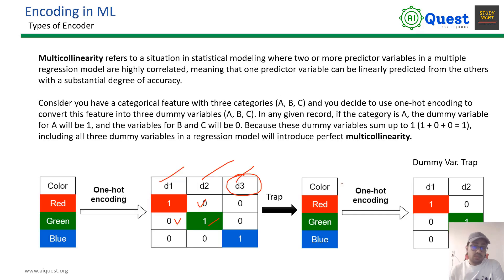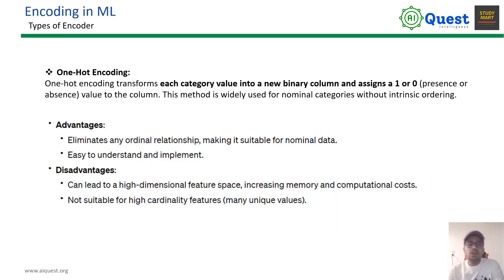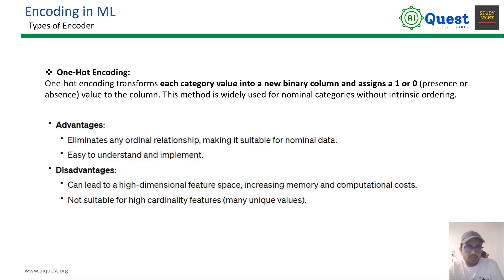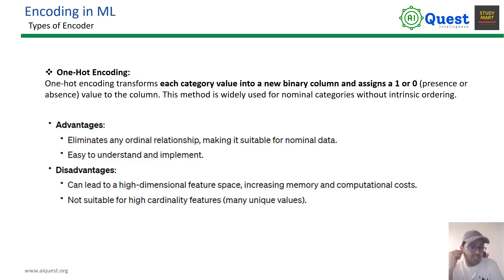If you want to see the details of the dummy variable trap, you can see the example here. You can also see the link in the description. Now, the advantage: one-hot encoding is suitable for nominal data. It is really easy to understand and implement. The disadvantage is high dimensionality.